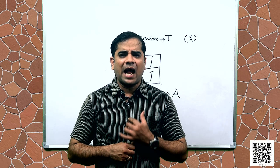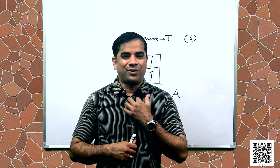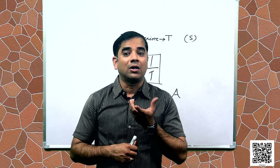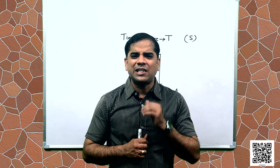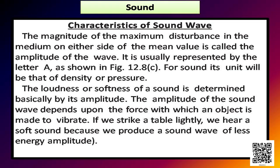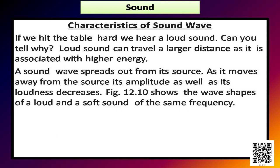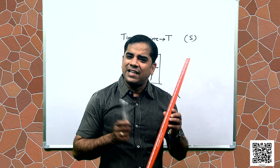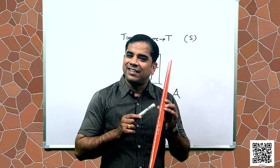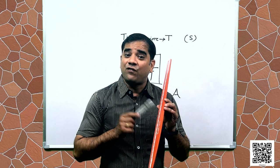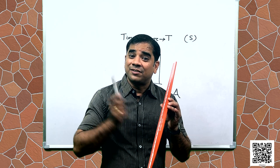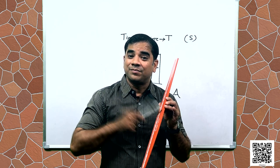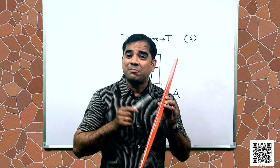The amplitude of the sound wave depends upon the force with which an object is made to vibrate. When I speak loudly, I am giving more force and the sound is louder. When I give less force, the sound is softer. If we strike a table lightly, we hear a soft sound of less energy; if we hit it hard, we hear a loud sound. I can demonstrate this with a scale — striking lightly produces a soft sound, increasing force makes it louder.